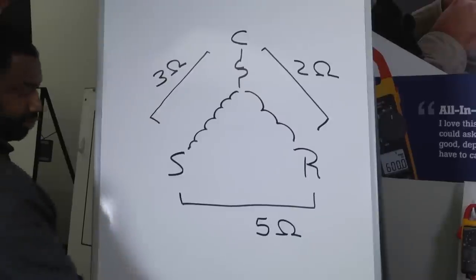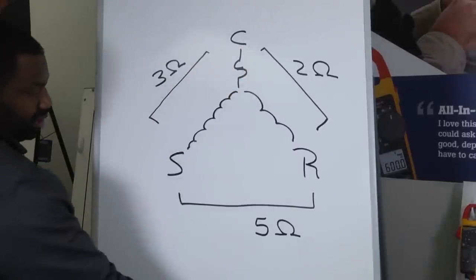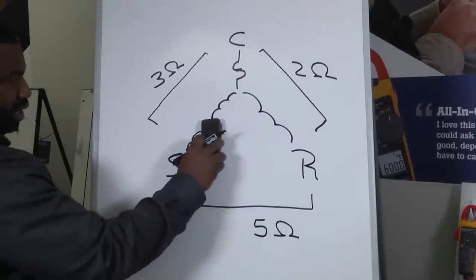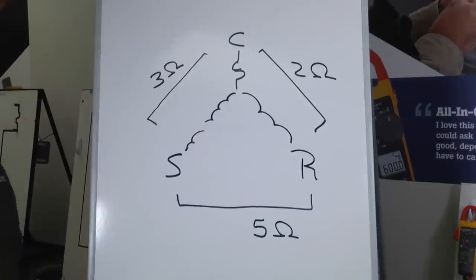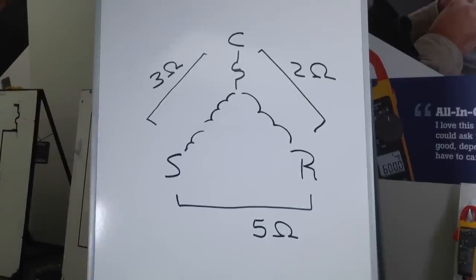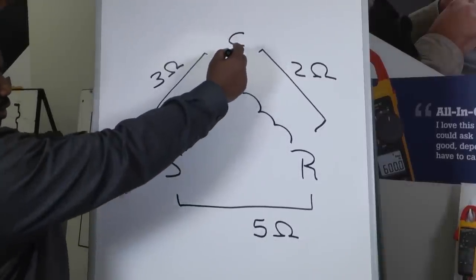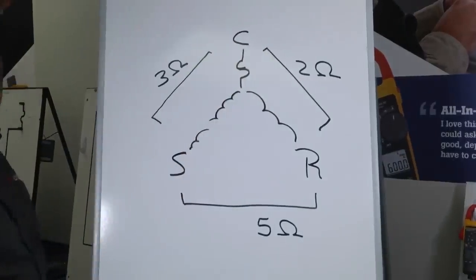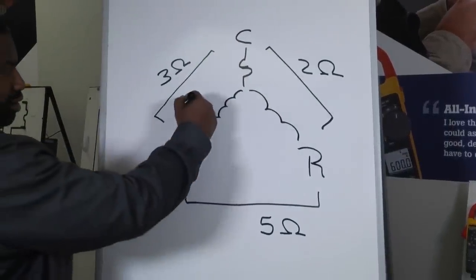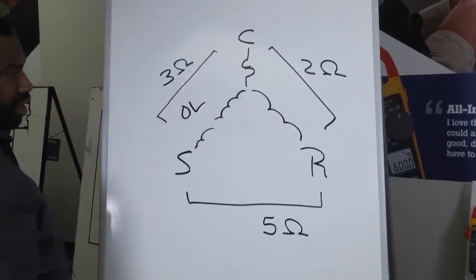For example, if we went from common, let's say we had a break right here and there's an issue in that particular winding, in that start winding, right? Well when we look on our meter, when we measure between those two points once we find out what they are, we would have an OL, right?